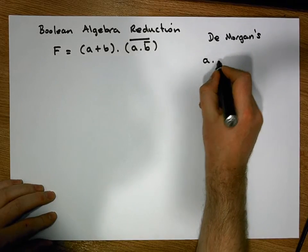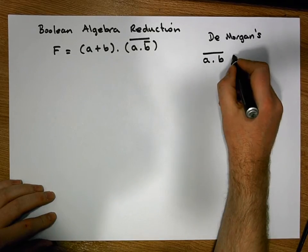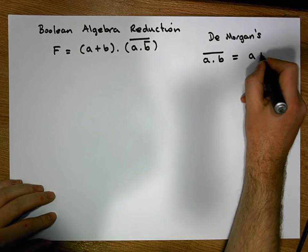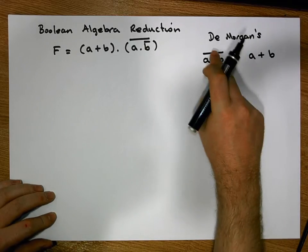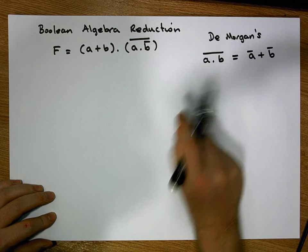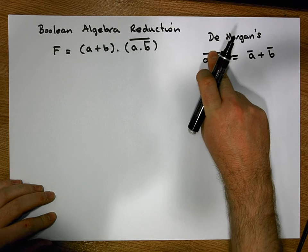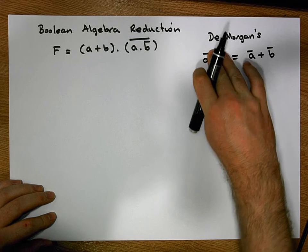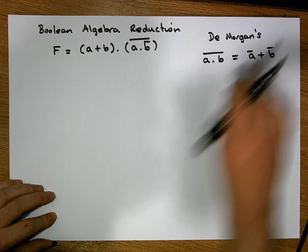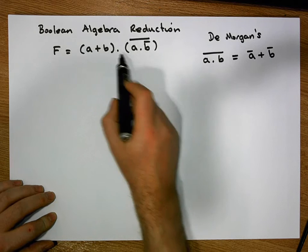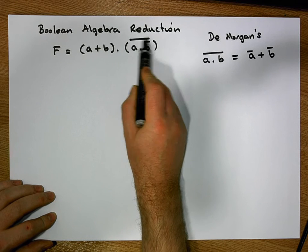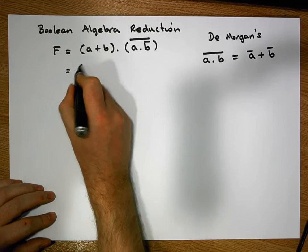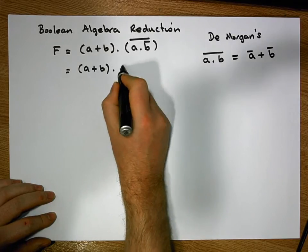De Morgan's Law states that (A AND B) negated is the same as A OR B — we break the bar and flip the sign, giving us Ā OR B̄, changing ANDs to ORs. So in this situation, since we have a negation across an AND, the function is equivalent to (A OR B) AND (Ā OR B̄) with the outer bar removed.